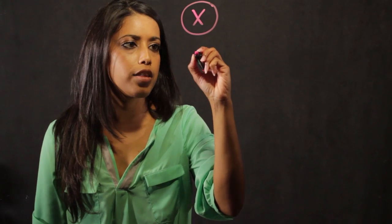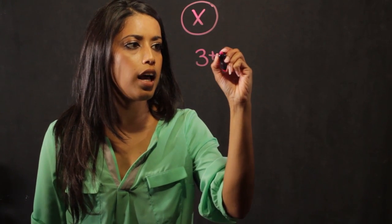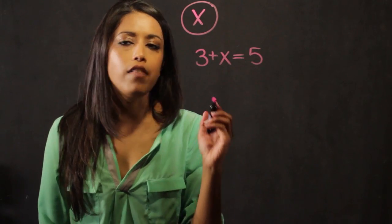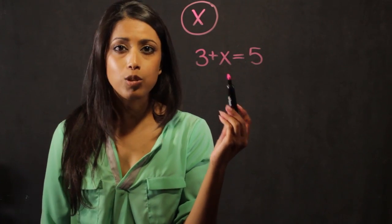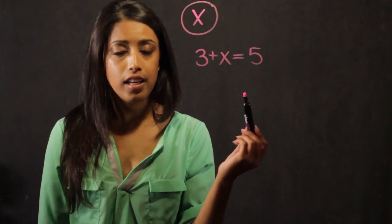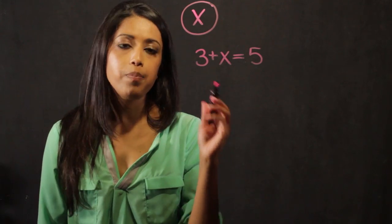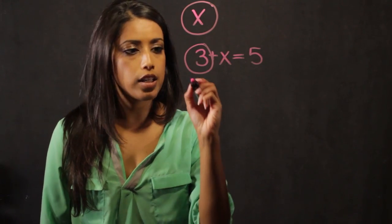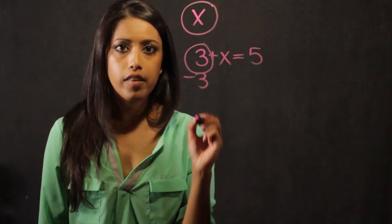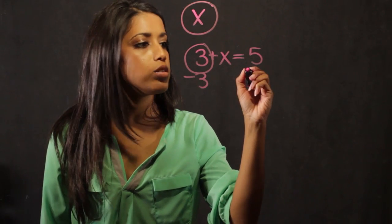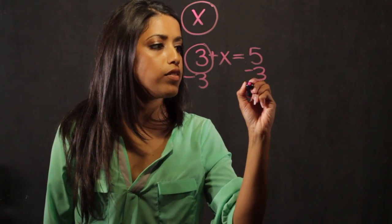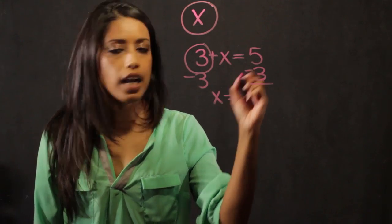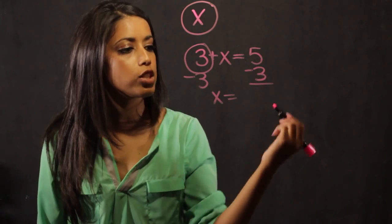Let's say that 3 plus x is equal to 5. If I want to figure out what x is, what I need to do is isolate it. And in this problem, I'm going to isolate it by taking away the constant 3, by subtracting it on the left side of the equal sign and also subtracting it on the right side of the equal sign. Then I have x all by itself, and I have the subtraction problem 5 minus 3, which gives me 2.